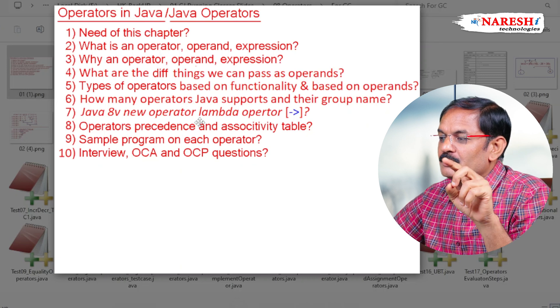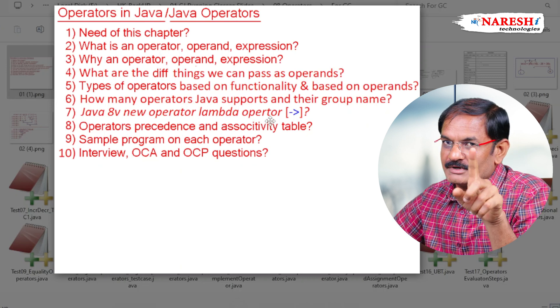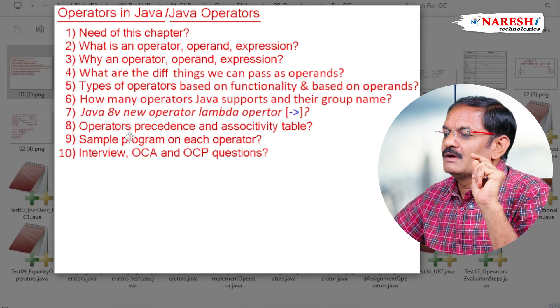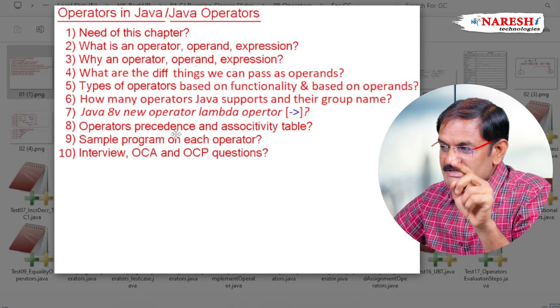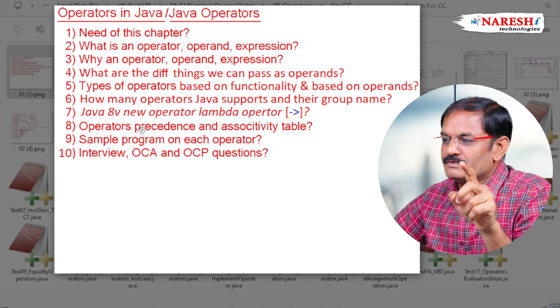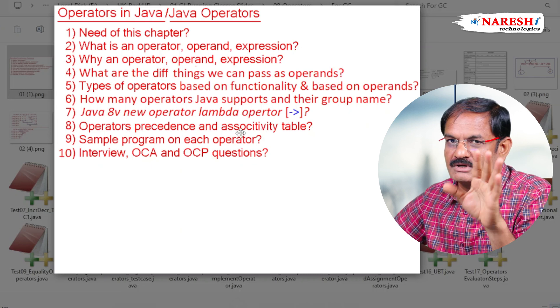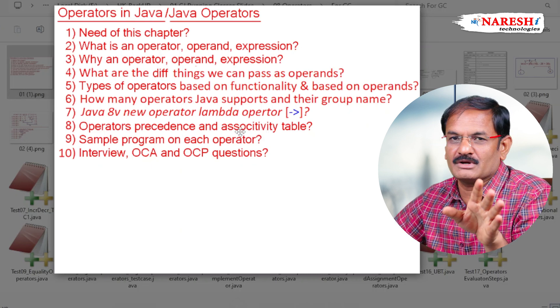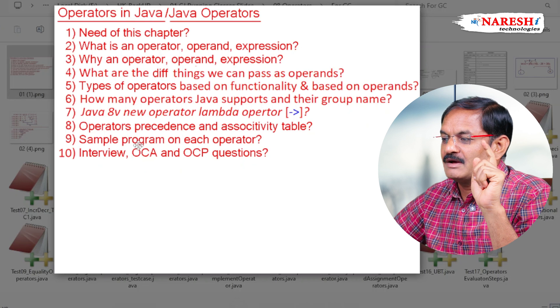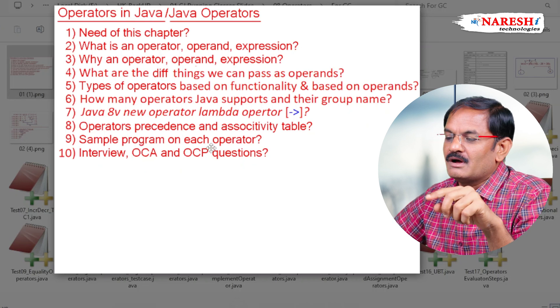Java 8 introduced a new operator — the lambda operator, the arrow operator, which is very important. Then we cover operator precedence and associativity table. Without knowing this, you cannot write a program or find the correct output. We will also go through sample programs on each operator.